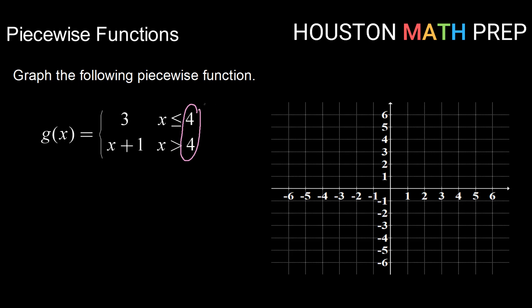So in this case anywhere to the left of four we're going to graph g of x equals three. Now that's one of our parent or library functions. That's a constant function which we know is a horizontal line at three.